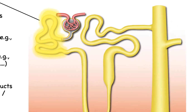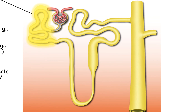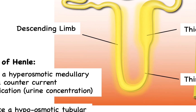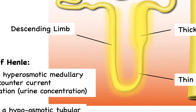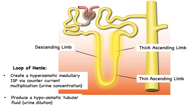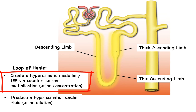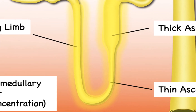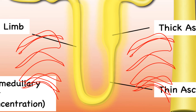Most of the fluid is reabsorbed in the proximal tubule, and the remaining fluid makes its way to the next main nephron segment: the loop of Henle. The loop of Henle has three subcomponents — the descending limb, the thin ascending limb, and the thick ascending limb — each with different transport processes. The descending limb is where water reabsorption occurs, while both ascending limbs carry out sodium and chloride reabsorption, as well as potassium, calcium, and magnesium. The first main function of the loop of Henle is to create a hyperosmotic medullary interstitial fluid via countercurrent multiplication, producing a very salty extracellular environment important for urine concentration when water conservation is at a premium.